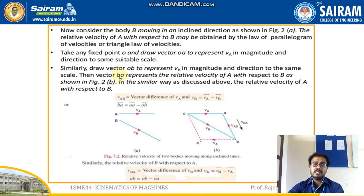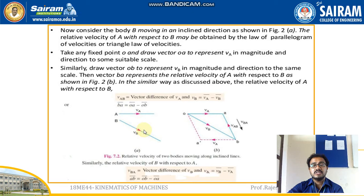Now consider body B moving in an inclined direction. The relative velocity of A with respect to B may be obtained by the law of parallelogram of velocities or the triangle law of velocities. We will have a detailed discussion on the parallelogram of velocities diagram.